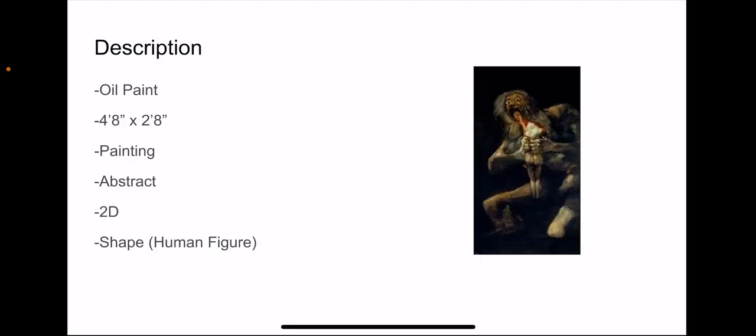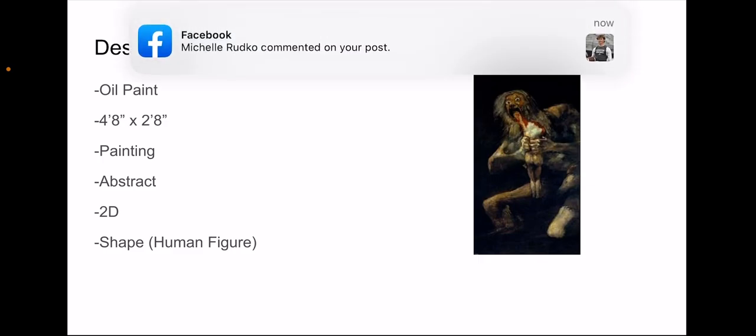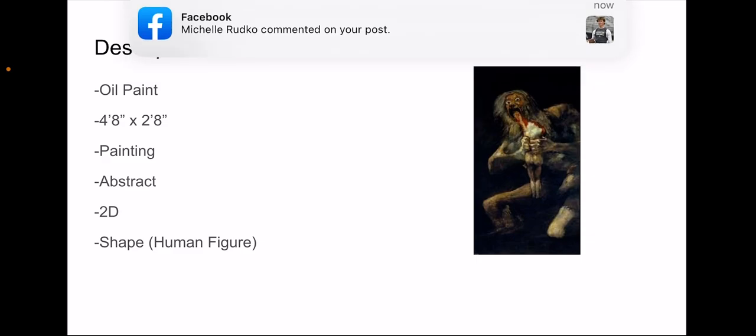Just to get started, I want to take note of the size first because it's a very large artwork. It's a 2D oil painting, and you can see that the way shape is expressed with the human figure is really interesting, which is what made me denote this as an abstract piece because the way the human form was expressed was really interesting.